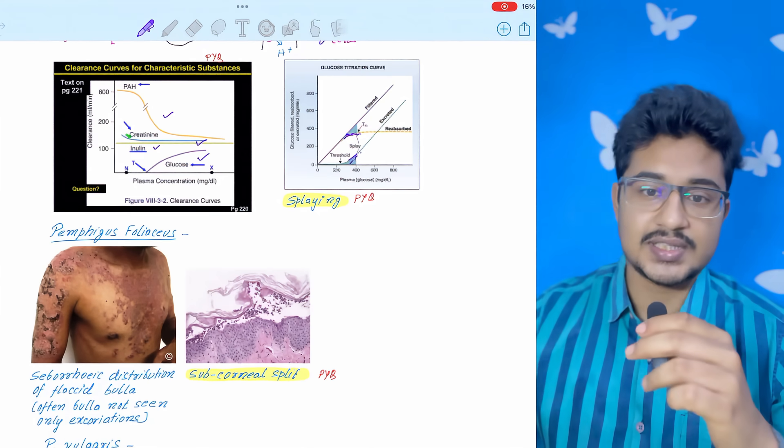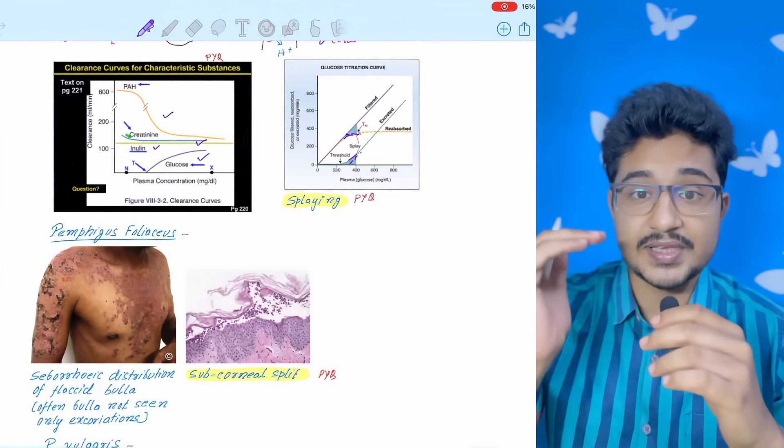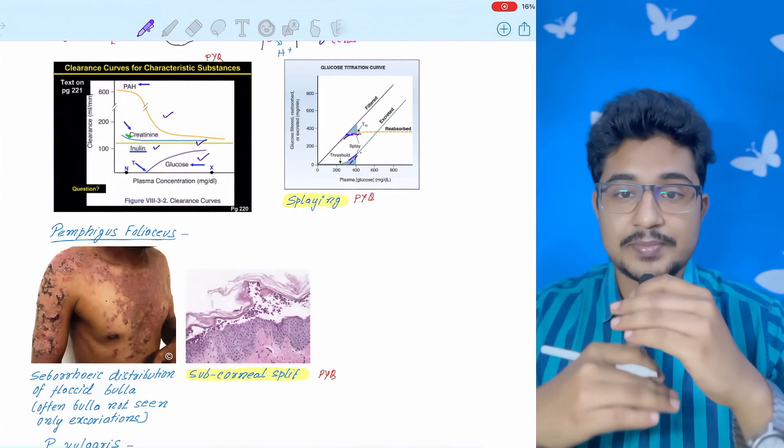Coming to blistering disorders. There are two kinds of blistering disorders: the pemphigus group if there is intraepidermal split, and the pemphigoid group if there is dermoepidermal split.